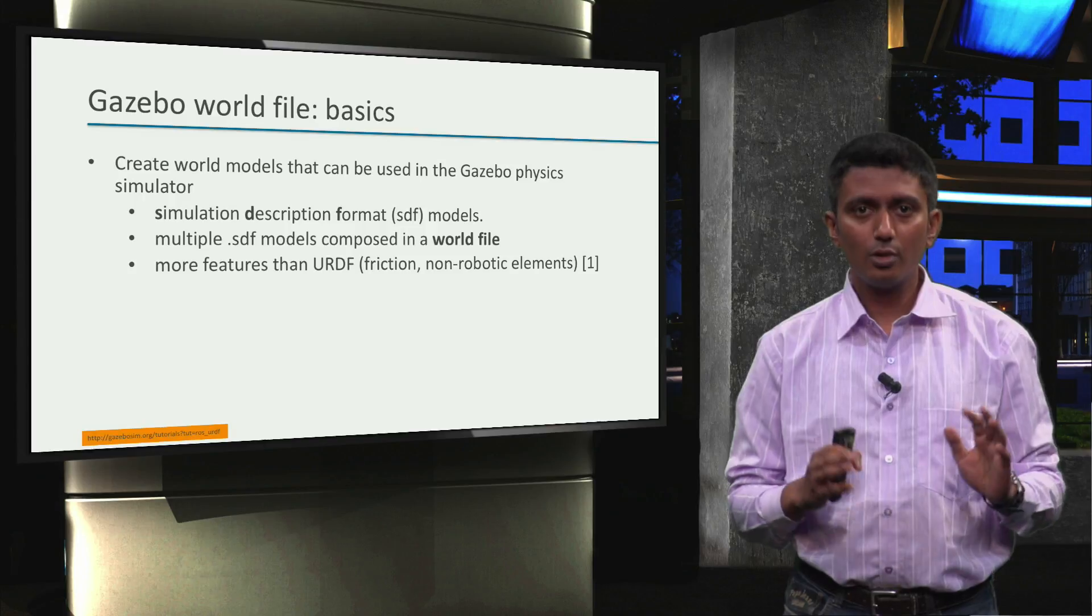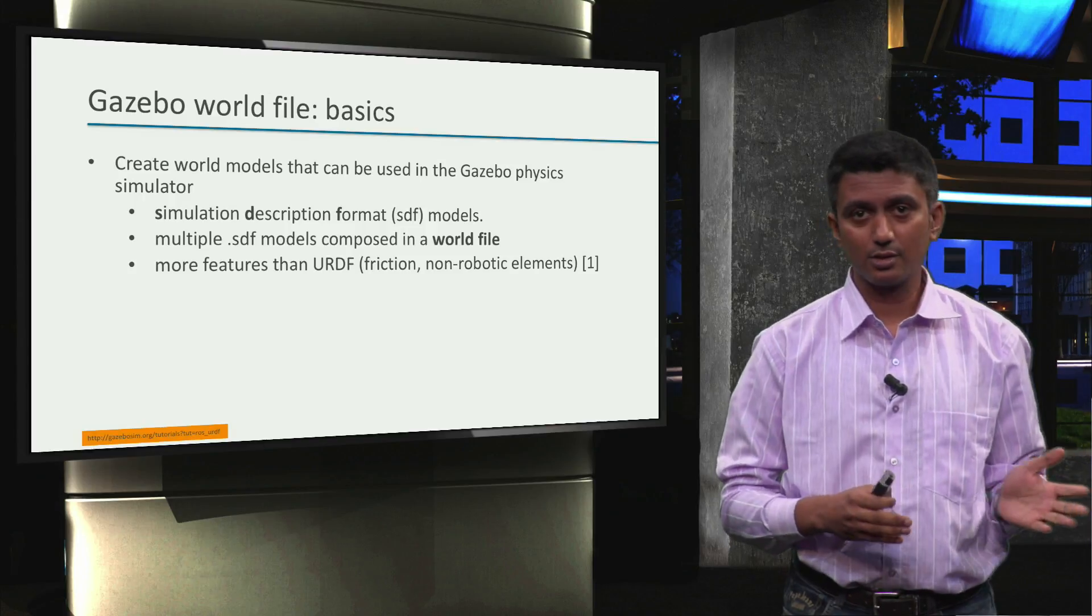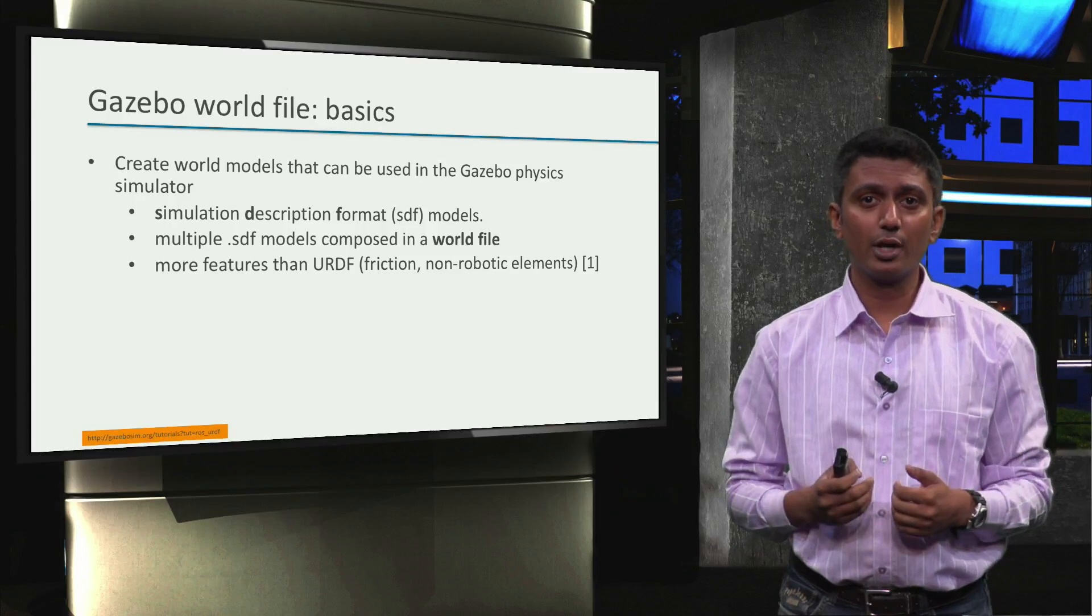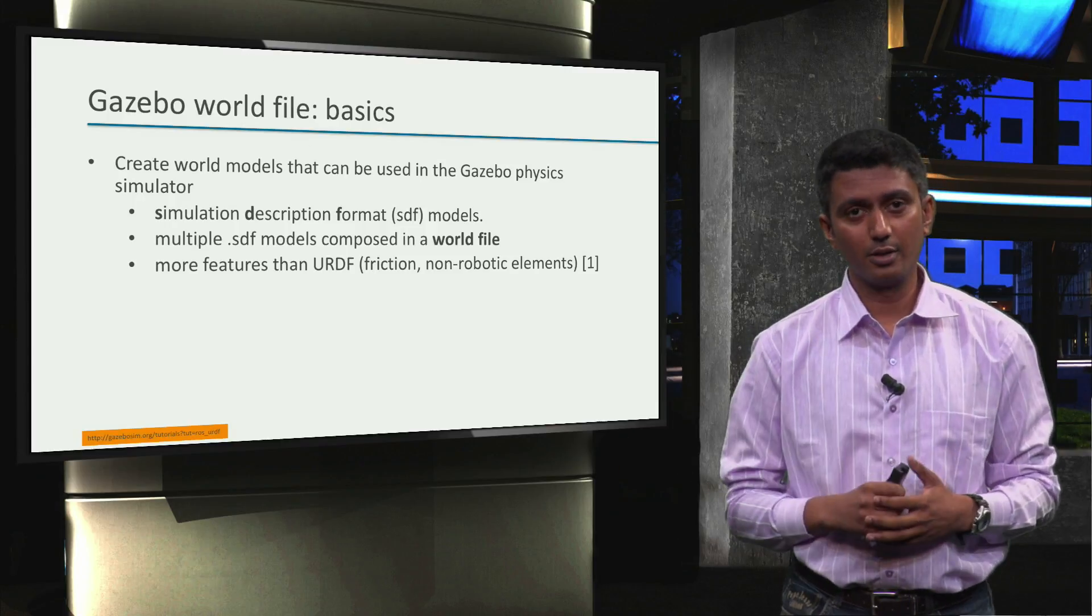And also include non-robotic elements like spotlights, camera, the sun, a green field and any real world component that you want to model as a part of your robotic environment.